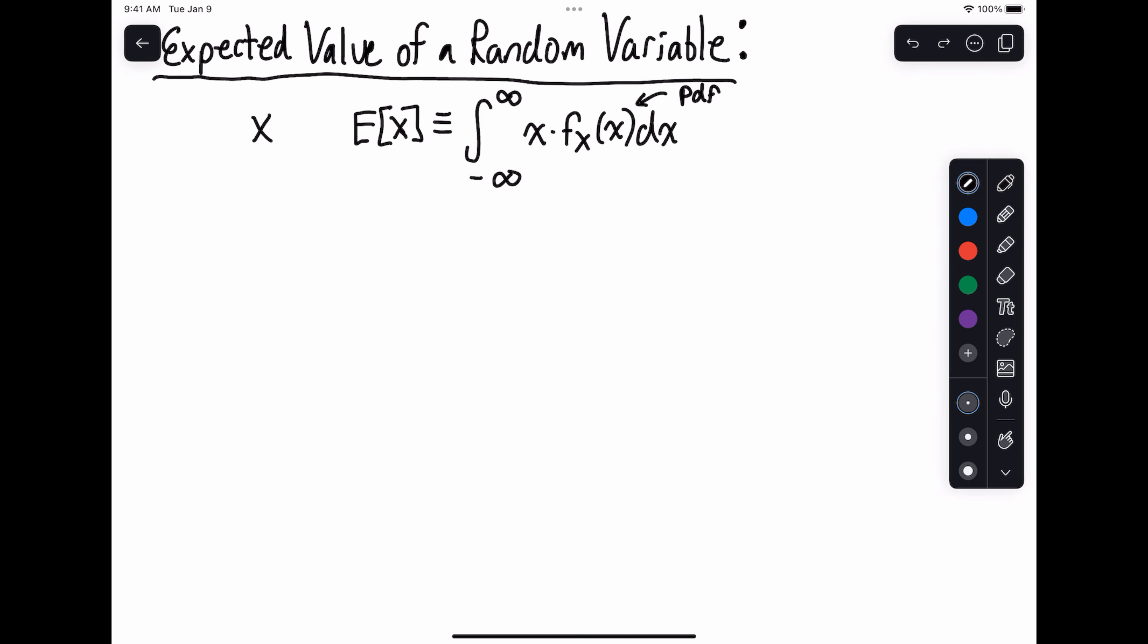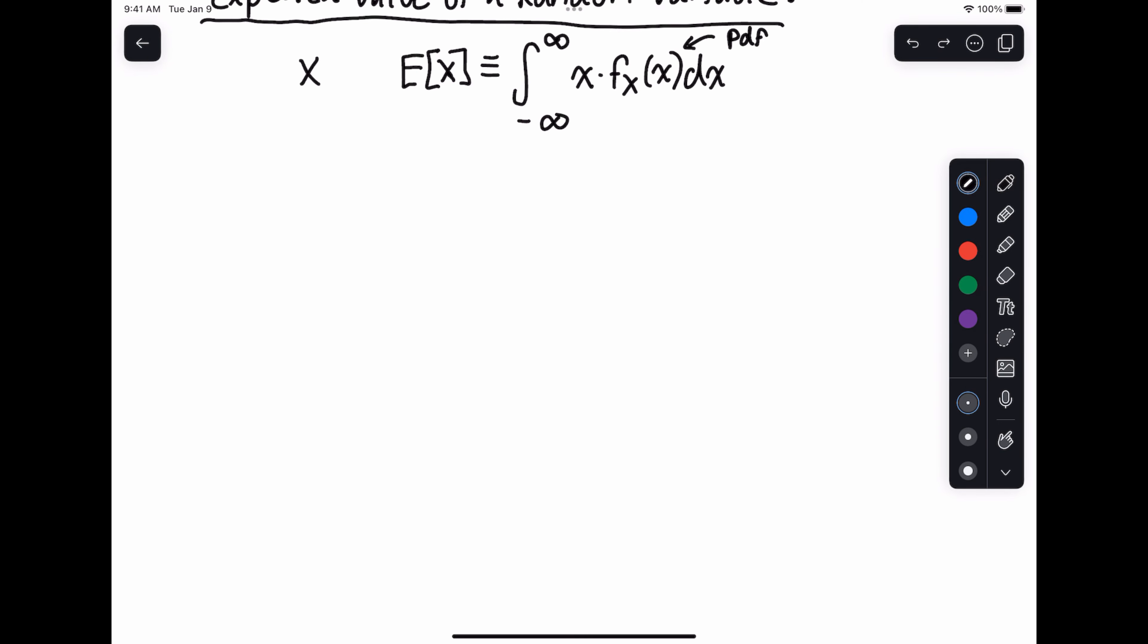But because our random variable is mapping outcomes to a measurable space, which x is a member of, like little x being the reals or something like this, what the expectation is doing is it's sort of capturing the fact that x means something. And we're basically encoding larger values of x in with the probability distribution at those particular points. So we're somehow capturing the value of x in addition to its probability when we have this measure.